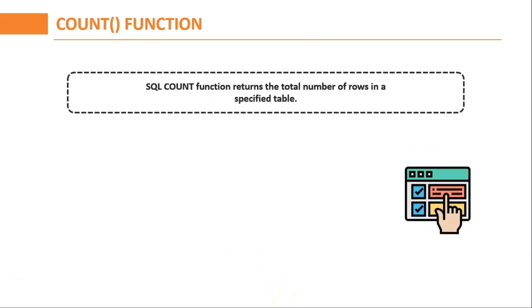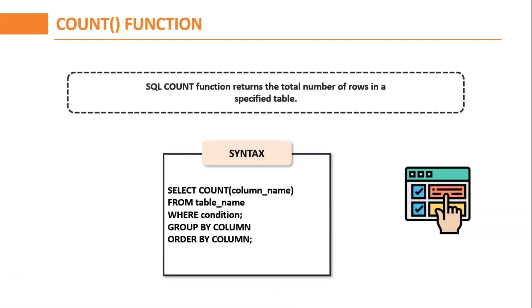Firstly, let us discuss about the COUNT function. The SQL COUNT function returns the number of rows in a table satisfying the criteria specified in the WHERE clause. It counts the number of rows or non-null column values only. The syntax is: SELECT COUNT(column_name) FROM table_name WHERE condition GROUP BY column ORDER BY column.